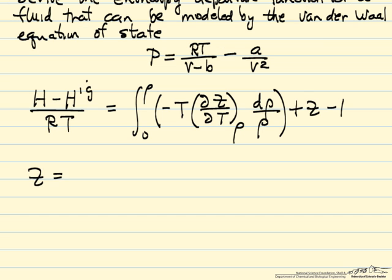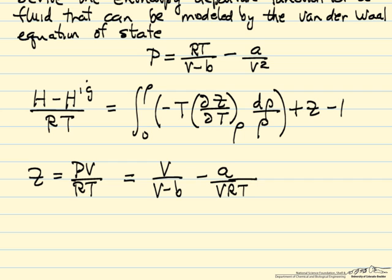So z is the compressibility factor. It's defined as PV over RT. So I can take this equation of state, divide by RT, multiply by V, and I'm going to end up with z equal to volume over volume minus this constant B, minus A over VRT. So I have the compressibility factor for Van der Waals equation of state.